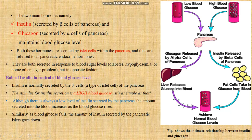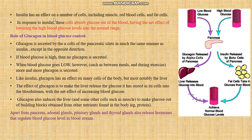Once insulin is secreted, it gives instructions to fat cells to take up extra glucose from the blood, which plays an important role in achieving normal blood glucose levels. Insulin has an effect on a number of cells including muscles, red blood cells, and fat cells. In response to insulin, these cells absorb glucose out of the blood, having the net effect of lowering high blood glucose levels into the normal range.